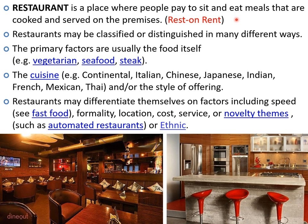A restaurant is a place where people pay to sit and eat meals that are cooked and served on the premises. Restaurants may be classified in many different ways. The primary factors in categorizing restaurants are usually the food itself — it may be a vegetarian restaurant, seafood restaurant, or steak house. They can also be categorized on the basis of cuisine on offer: continental, Italian, Chinese, Japanese, Indian, French, Mexican, Thai — either individual cuisine or a combination, and by style of offering.